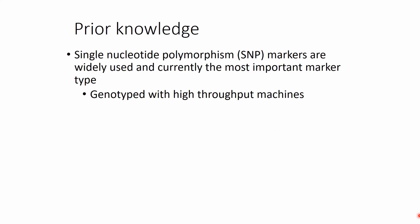Before we start, let's activate some prior knowledge. The two most important issues to highlight are: first, that single nucleotide polymorphisms, or SNPs, exist. These are markers that are widely used and currently the most important marker types in genomics.